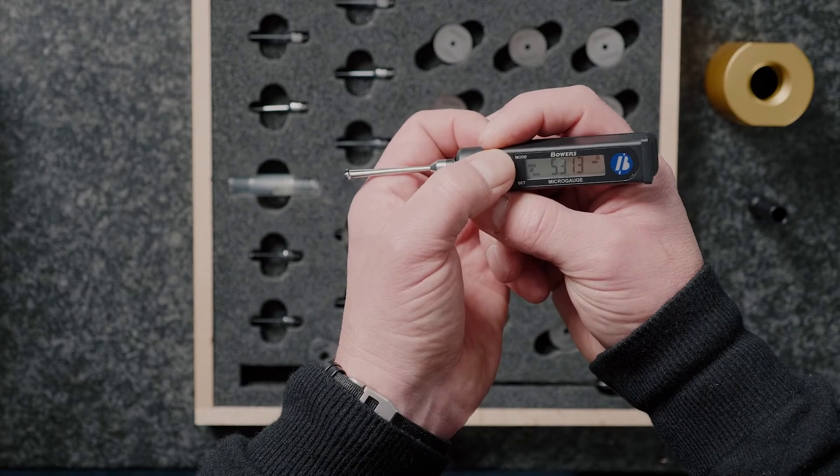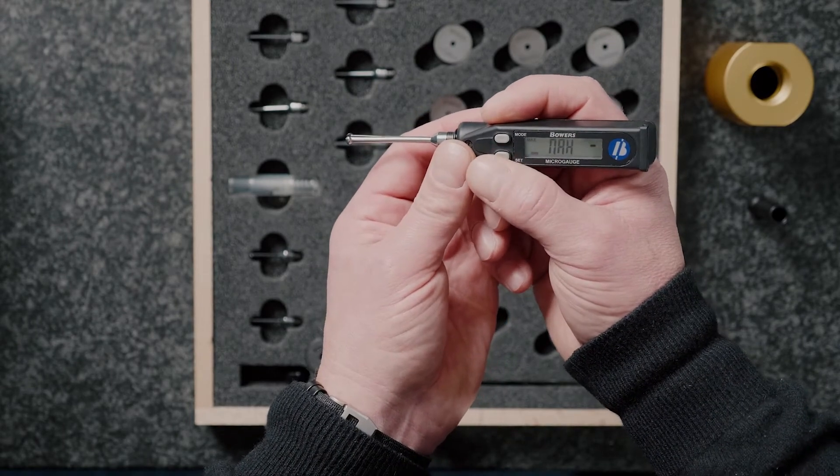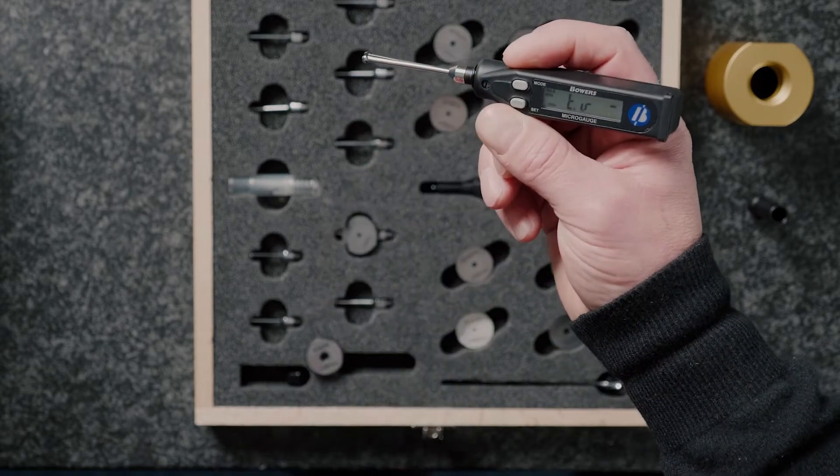As you noticed, when I went into dynamic mode, there were other options: min, max, and there's even a TIR function.